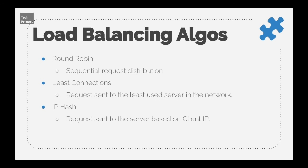The last algorithm is IP hashing, useful when a client's request needs to go to a dedicated set of servers. Redirection is done based on the client's IP address, so only servers specific to that client's IP are used. For example, on the IRCTC website in India, requests from general users go to one server farm, while requests from internal IRCTC staff go to a different server, giving them better performance.